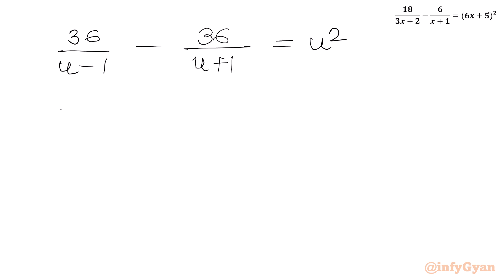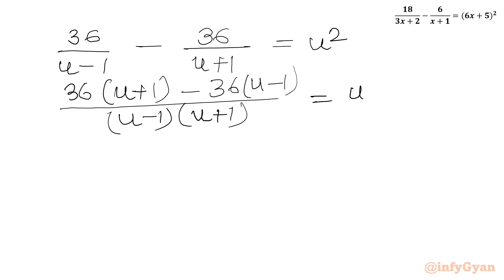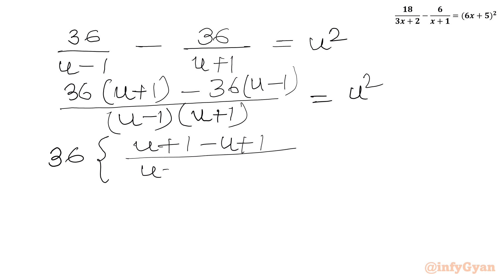Now we take the LCM, which is (u − 1)(u + 1). So we write: 36(u + 1) minus 36(u − 1), all over (u − 1)(u + 1), equals u squared. Taking 36 as a common factor, the bracket simplifies to (u + 1) minus (u − 1), which equals 2.